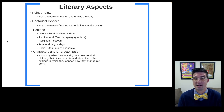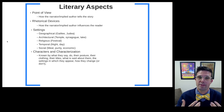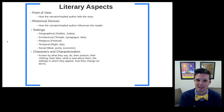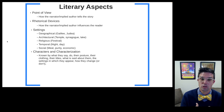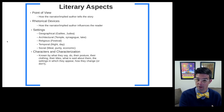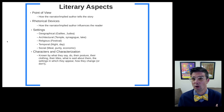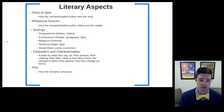Characters and characterization are another major literary aspect of narrative criticism. In any narrative, characters are known by what they say and do, what their posture is, what they wear, what their titles are, what is said about them by other characters or by the narrator, the settings in which they appear or don't appear, and how they change or don't change in the course of the story.